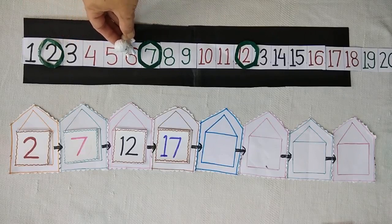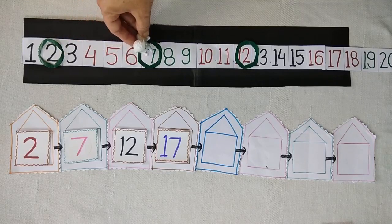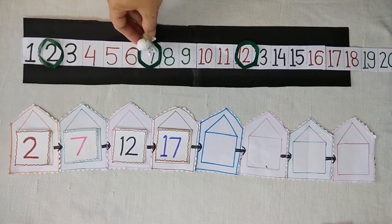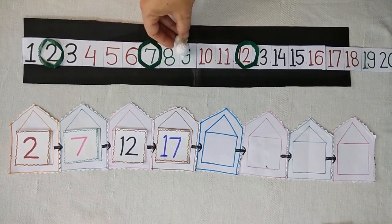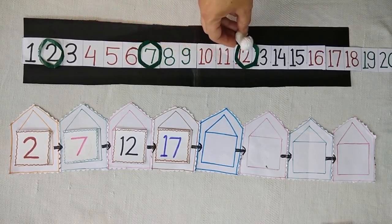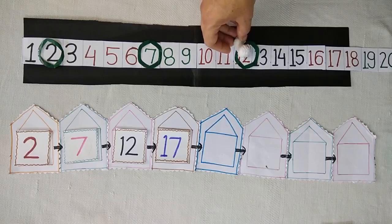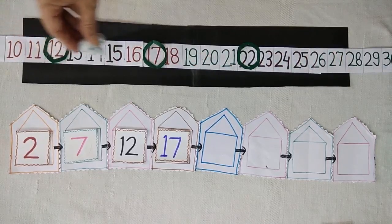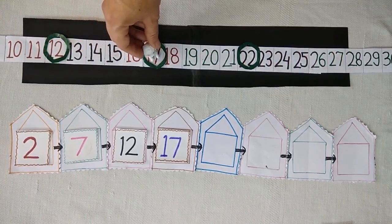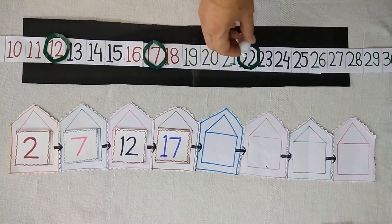Skipping 4 numbers jumps to the 5th number, that is 7. Again skipping 4 numbers jump to the 5th number, that is 12. Then jumps to 17, 22.